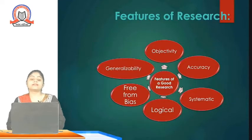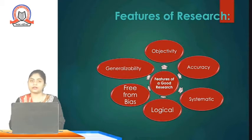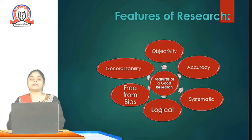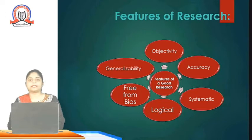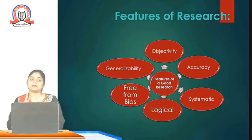What are the features of research? Features are the characteristics. First is objectivity — what is the purpose? Why are we doing research? Either to solve a problem, come up with innovation, or do modification. Second is accuracy — how valid and accurate is the data? We can put that data publicly. There should be accuracy in our research work because many people are going to refer to our research work.